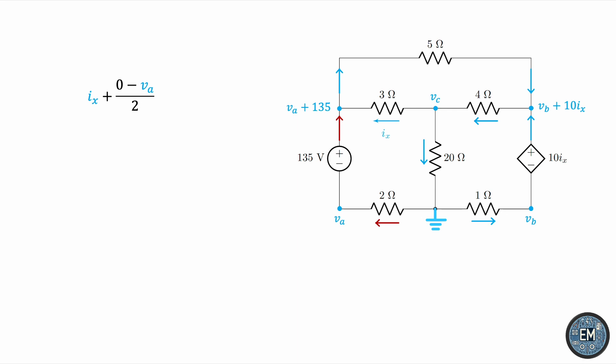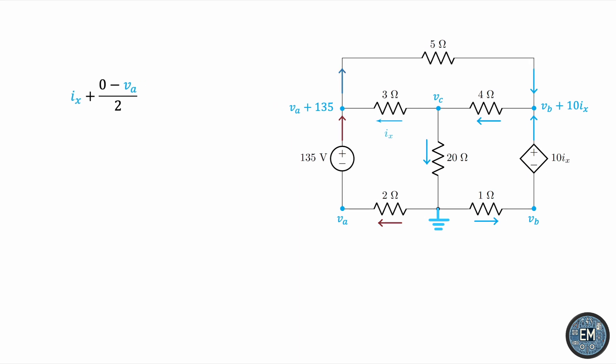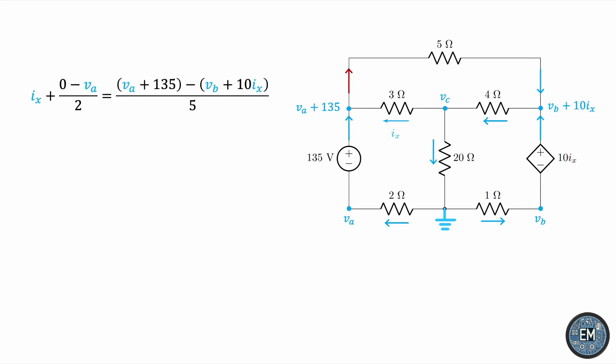The sum of these two must be equal to this current leaving node A going through the 5-ohm resistor. So that's VA plus 135, the potential at the initial node, minus VB plus 10IX, the potential at the final node, over the resistance. It's always this way. First node minus second node over resistance. This gives you the current. Let's clear the denominators by multiplying throughout by 10.